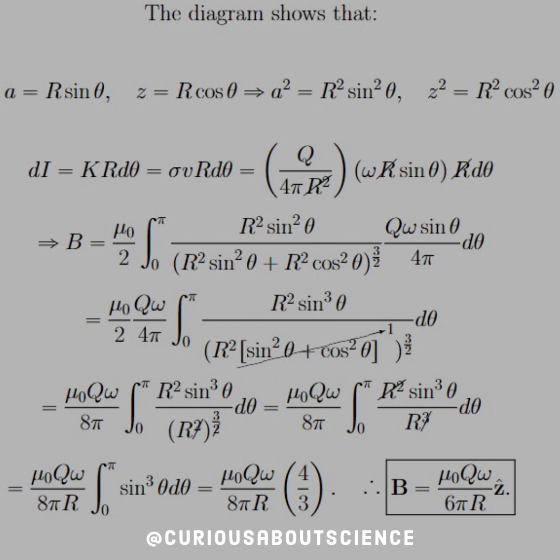And thus, we get an R cubed in the denominator, which cancels with the R squared in the numerator. So finally, we get to all the constants out front, being mu naught Q omega over 8 pi R. And then we're just left with sine cubed theta, which, when plugged into a calculator, expresses as 4 thirds.